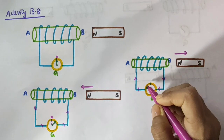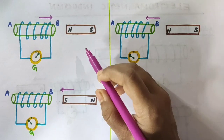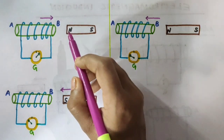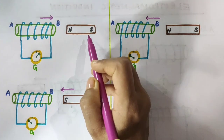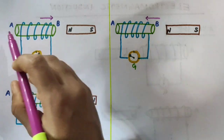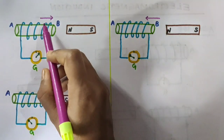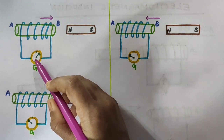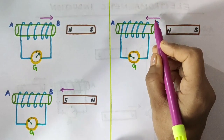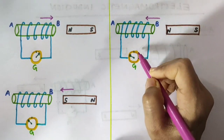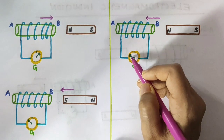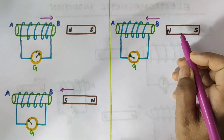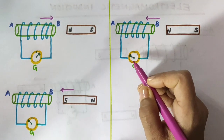The current this time is in the opposite direction to the first case. Now consider the magnet placed stationary here, with the north pole on one side and south pole on the other, and coil AB with end B and end A. When the coil is moved towards the north pole of the magnet, the galvanometer needle deflects towards the right. When the coil is moved away, the needle moves toward the left. When both the coil and the magnet are kept stationary, the deflection drops to zero.